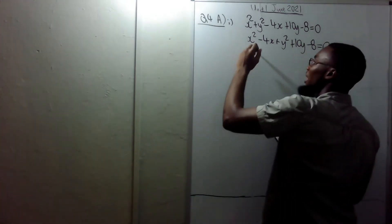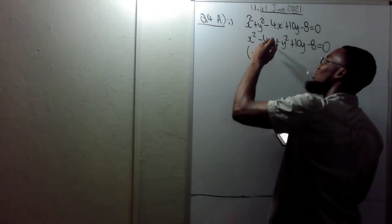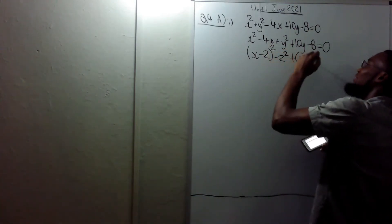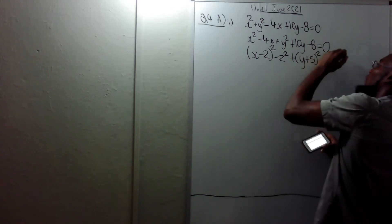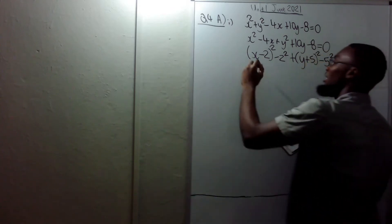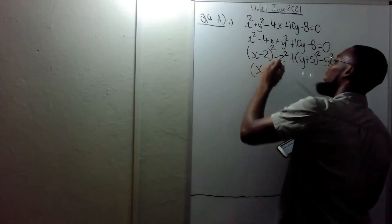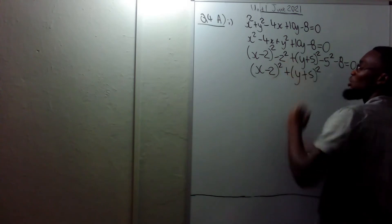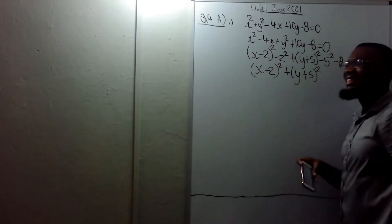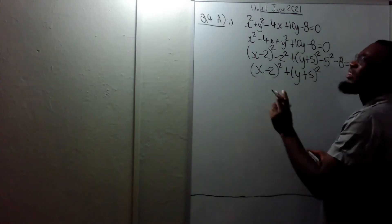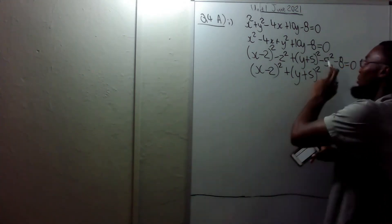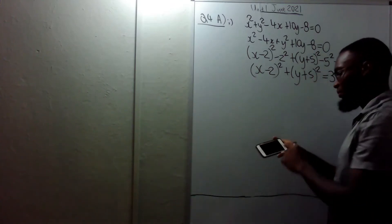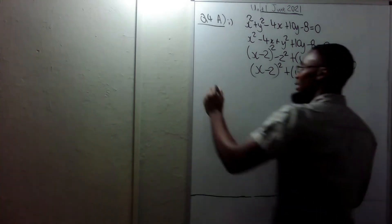Complete the square for the x term: that's x minus 2 squared minus 2 squared, plus y plus 5 squared minus 5 squared, minus 8 equals 0. That is x minus 2 all squared plus y plus 5 all squared. Minus 2 squared is negative 4, minus 5 squared is negative 25, so negative 4 minus 25 is minus 29, minus 8 gives negative 37. Bring it over: that's 37.